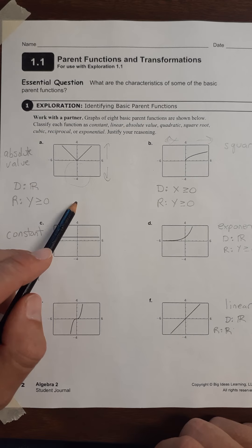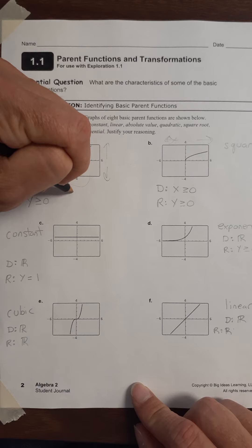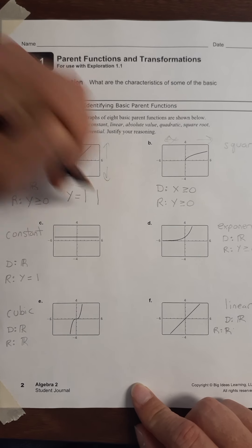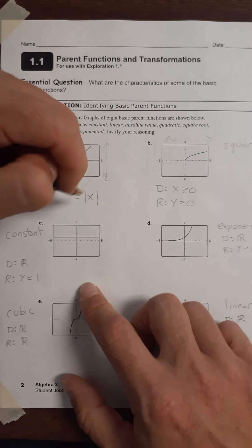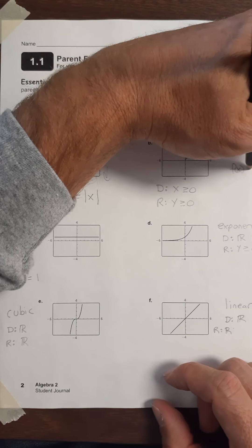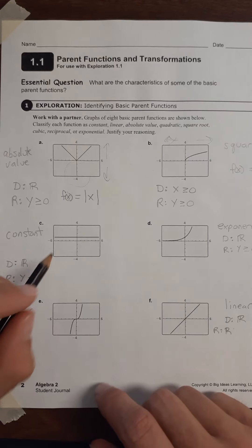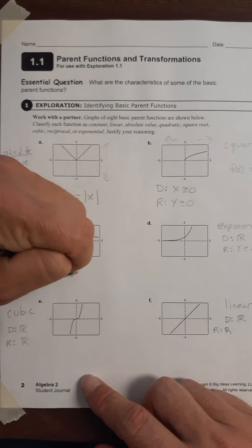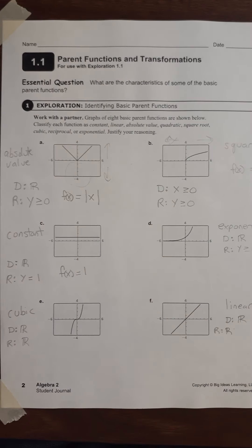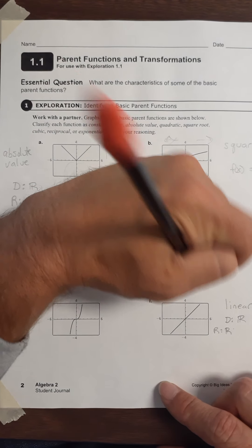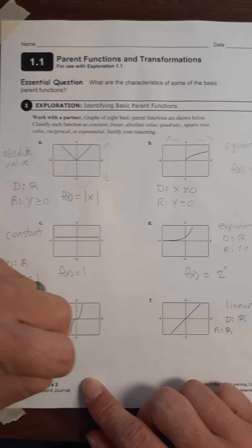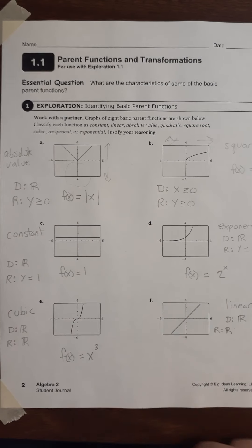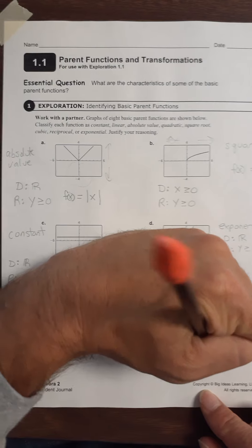Let's go back to page two. The basic absolute value function equation is f(x) equals the absolute value of x — the absolute value symbol is two straight up-and-down bars. On to the square root: f(x) equals the square root of x. For part C, the constant: f(x) equals one, since the function is always at one. The exponential is f(x) equals 2 raised to the x power. The cubic is f(x) equals x cubed. And for the linear, f(x) equals x.